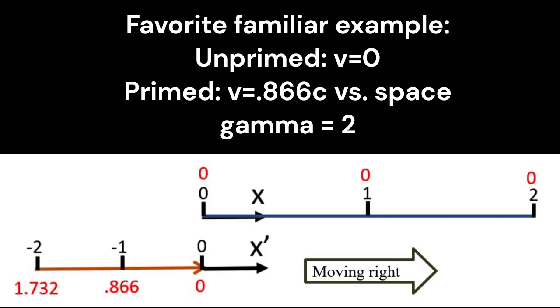To test this out, first let's just use our favorite familiar example. Let the unprime frame be v equals 0 state, no time skewing, full length, length of 2, and let the prime frame be moving at 0.866c through space, which gives a relative velocity of 0.866c and a relative gamma of 2 for these two reference frames.